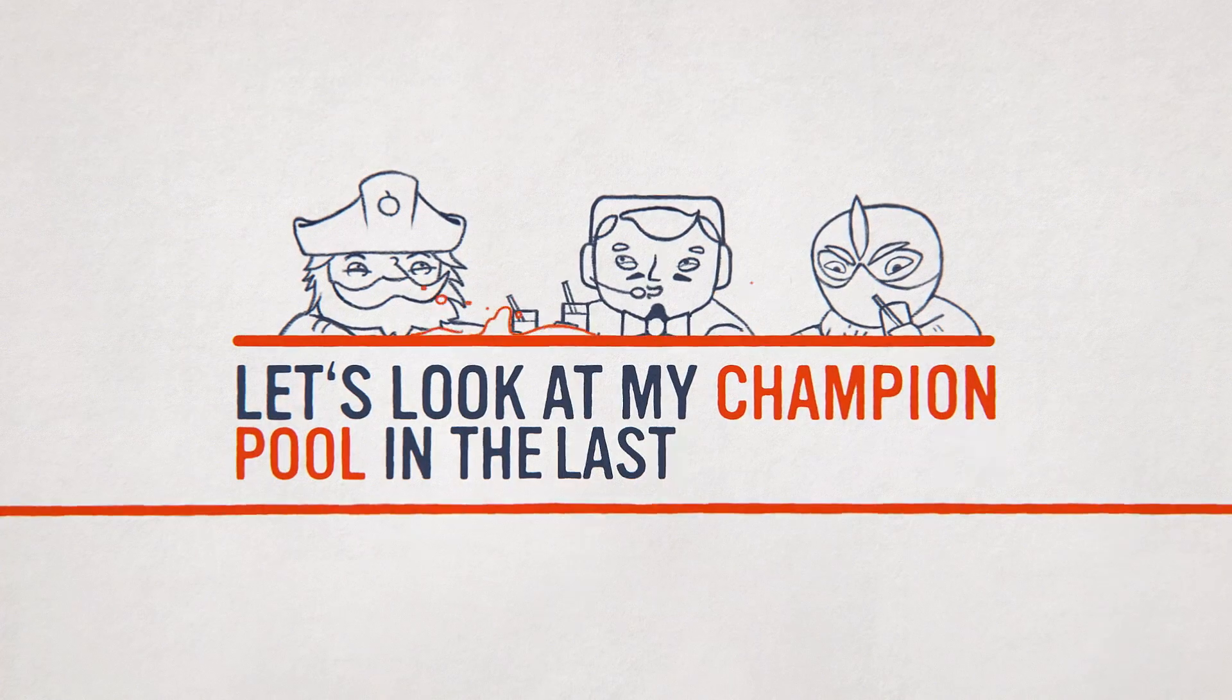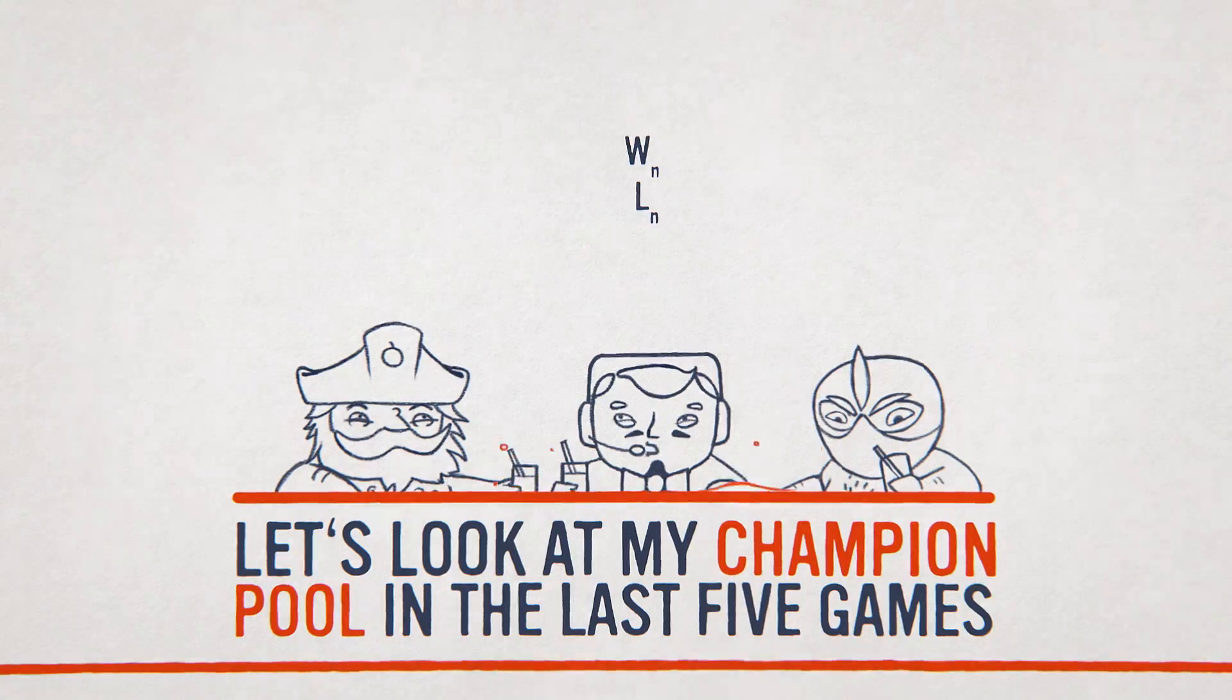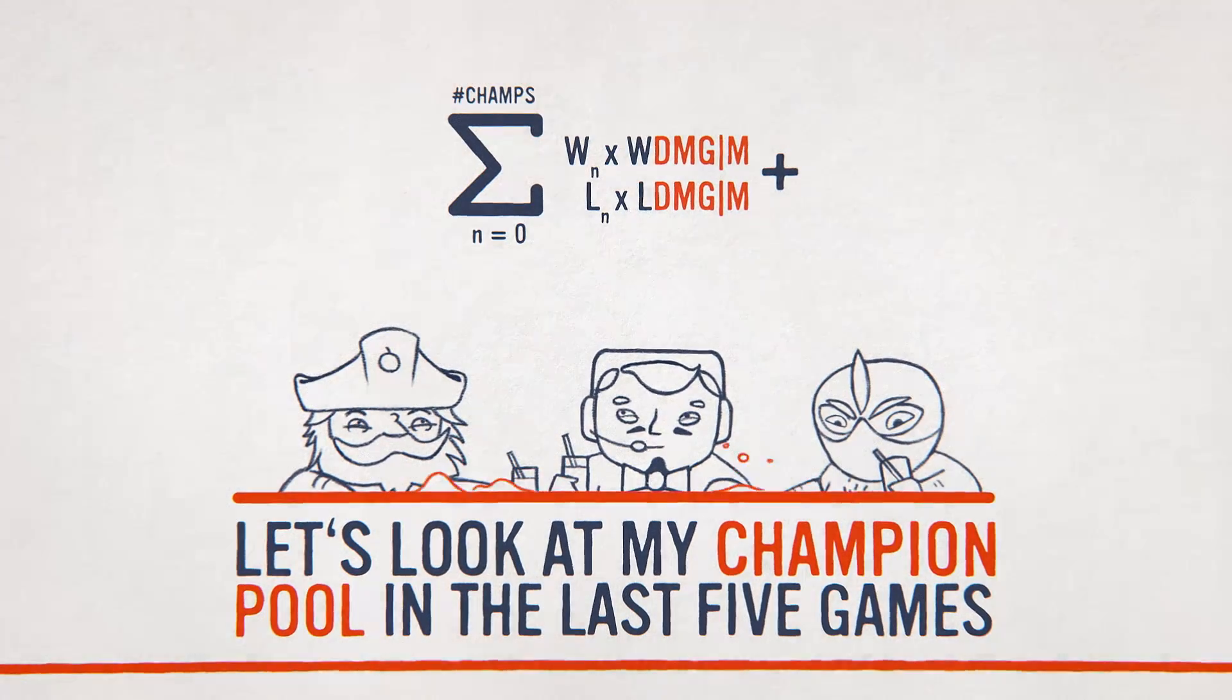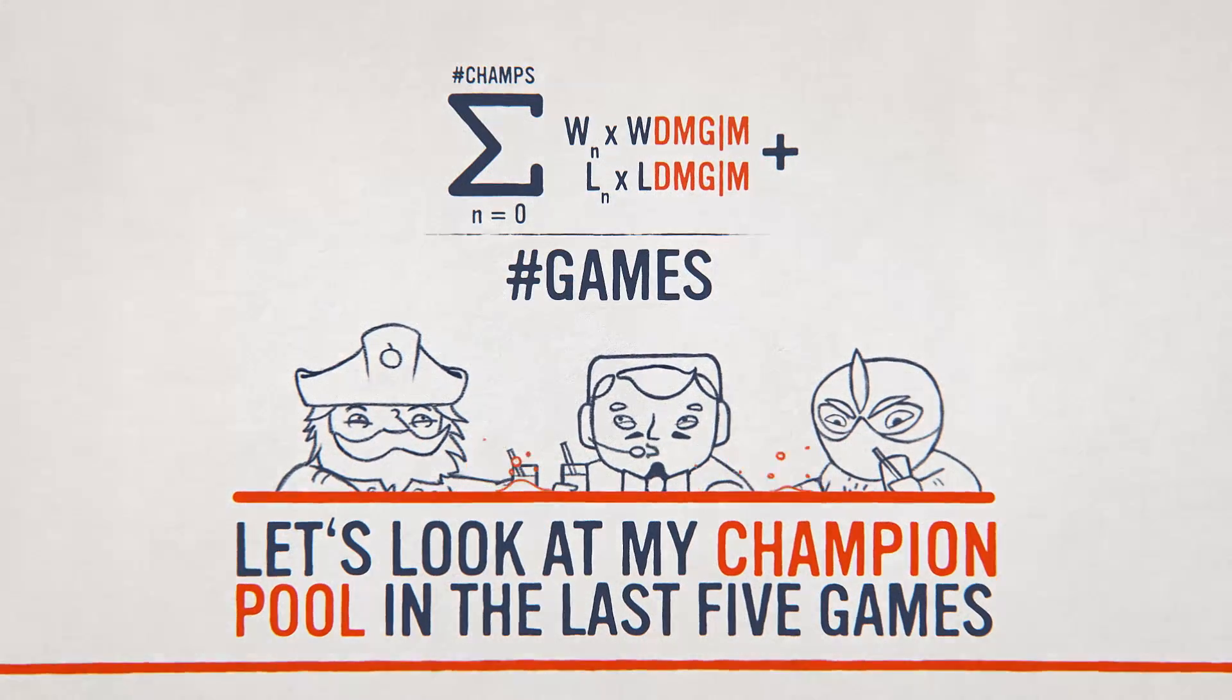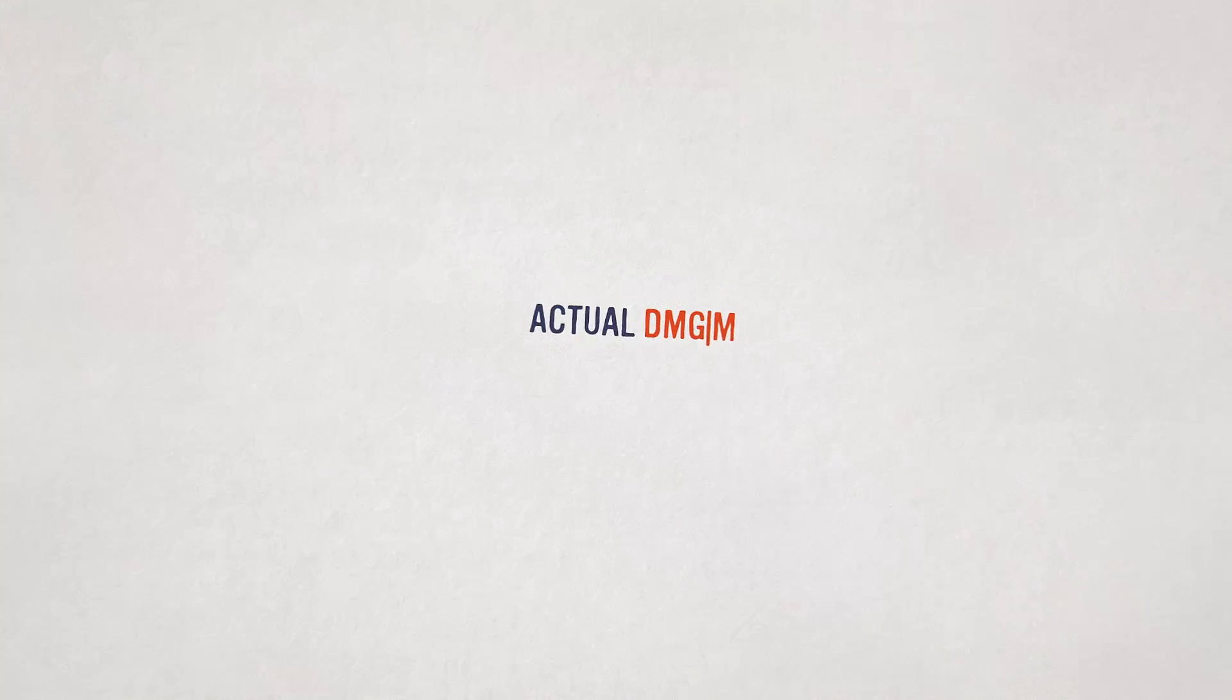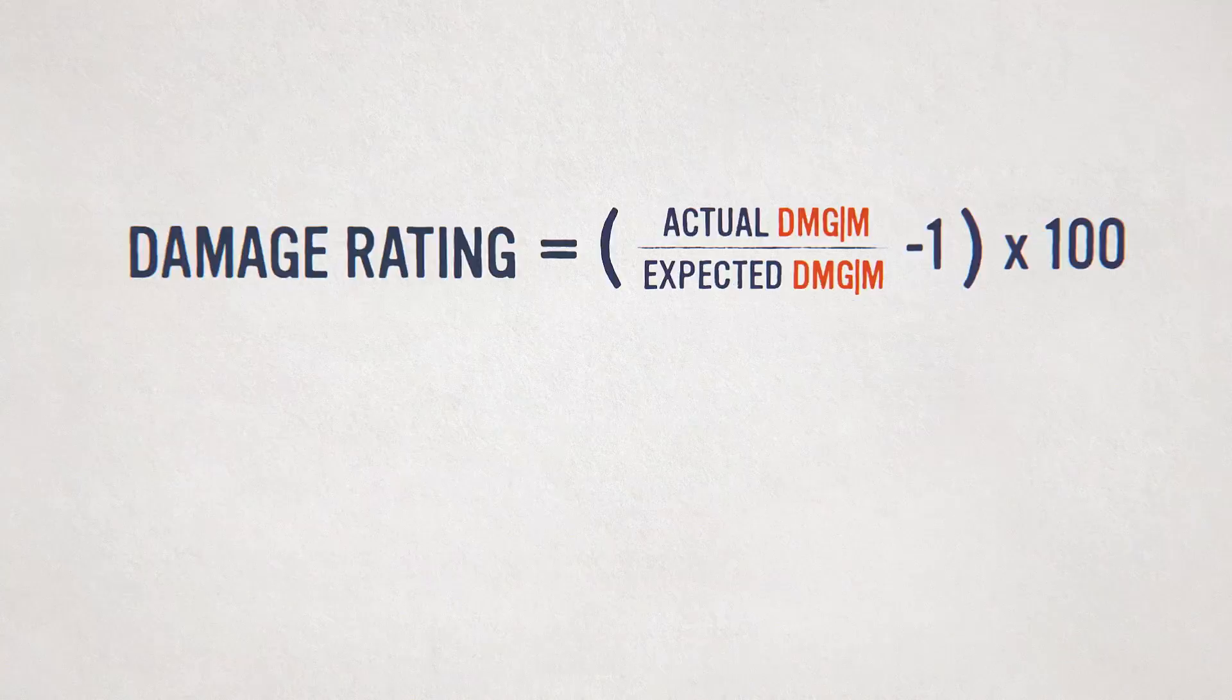Let's look at my champion pool in the last five games. We look at my win-loss record and the professional average DPM in wins and losses for those champions. We take the sum of the professional average, multiply it by the frequency played and divide it by my total number of games played to get the expected damage output. Finally, we divide my average DPM by the expected DPM, apply some math and voila! We get a damage rating!